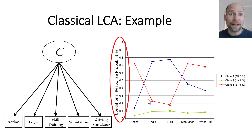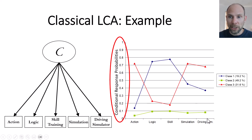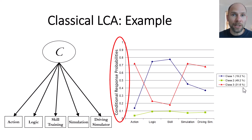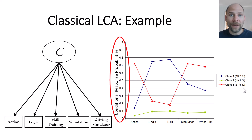The class properties are reflected in the conditional response probabilities, which are estimated as one parameter of classical latent class analysis. The second parameter estimated is the latent class sizes or class proportion parameters, shown here as percentages in the legend. Class 1 comprised 19.2 percent of individuals, Class 2 comprised 49.2 percent — so almost half of the sample fell into the non-player class — and Class 3 had about 32 percent.